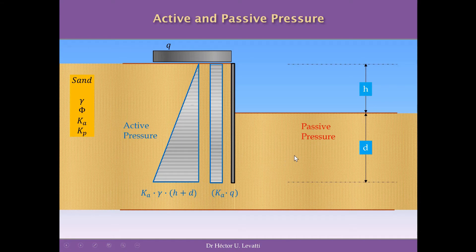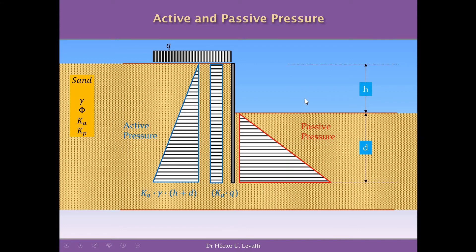In terms of passive pressure, we have a reaction because the active pressure is an action on the wall. This reaction has a triangular, linear distribution, and its base value depends on the equilibrium of the wall, since any structure in civil engineering must be in equilibrium.